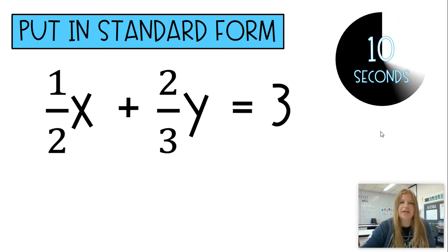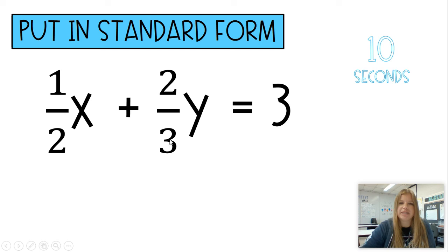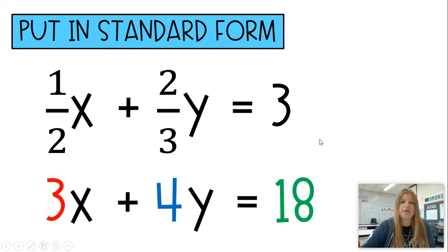Think about the same thing here. We want integers. So think about what you would multiply each A, B, and C value for. Now, you probably weren't able to finish this one, but think about it. If I have denominators of 2 and 3, my least common multiple of 2 and 3 is 6. So if I multiply this entire equation by 6, I would end up getting 3X plus 4Y equals 18, which means I have nice integer values for my A, B, and C, and I'm good to go.